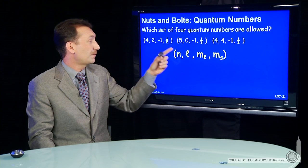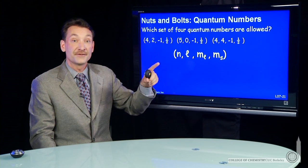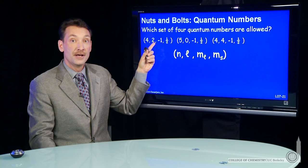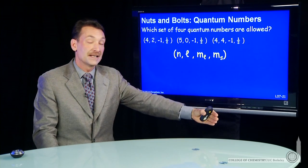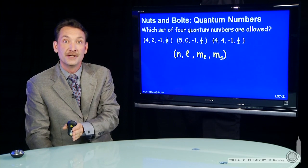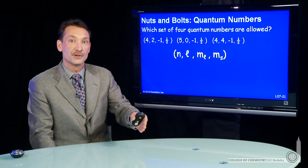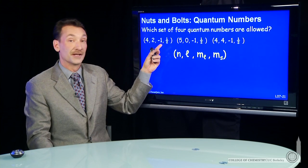Minus 1, that's a possible value of m sub l. That's fine because when l is 2, m sub l goes from minus 2 to plus 2 in integer steps. Minus 2, minus 1, 0, 1, and 2 are all possible values.